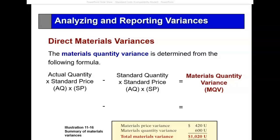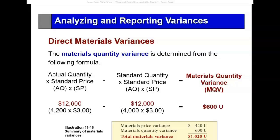So $12,600 is the actual quantity times the standard price. Standard quantity times the standard price is $12,000. I have a quantity variance of $600 unfavorable. That explains why I have a total unfavorable of $1,020 — $600 unfavorable on the quantity variance and $420 unfavorable on the price variance.